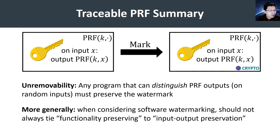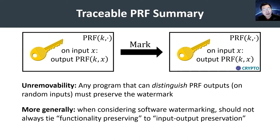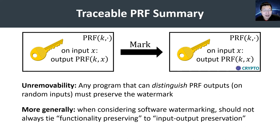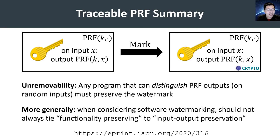This illustrates a more general point: when studying notions of software watermarking, we should not always immediately tie functionality preserving to a notion of input-output preservation. In particular, there are many natural settings where we want to distinguish between what honest parties should be able to do — the functionality-preserving property — versus what it means for an adversary to break security of the scheme. We should be able to capture adversarial strategies that do not necessarily replicate the exact input-output behavior, but could still break the scheme in other contexts. For full details on the constructions and proofs, I'll refer to our paper on ePrint.